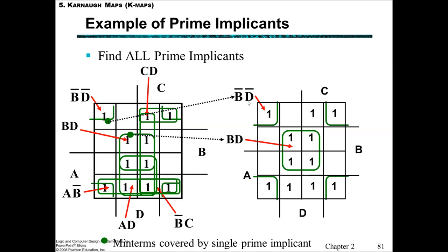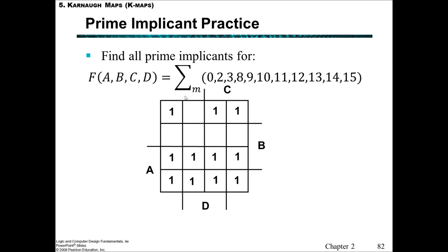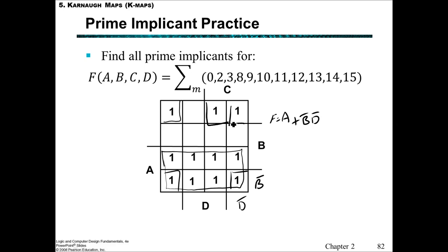So B·D and not-B·not-D are the essential prime implicants — we must have them. The others have various solutions, but we need to cover the remaining three minterms using whatever combination of the non-essential prime implicants. Finding all the prime implicants for another function: we go looking for a 16 — can't find one — but we can find a 2×4 rectangle giving the 8, which is A. Then some 4s: not-B·not-D, and C·not-B. In that way we've covered all the ones and don't need any more.